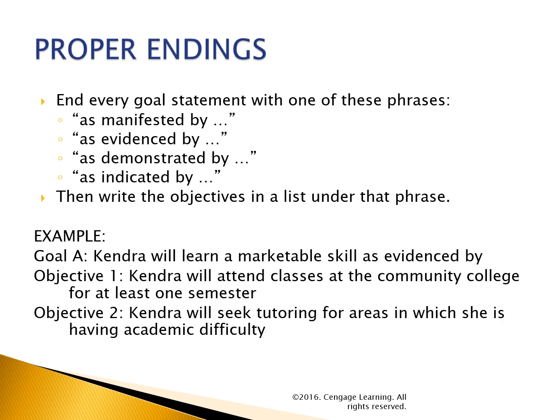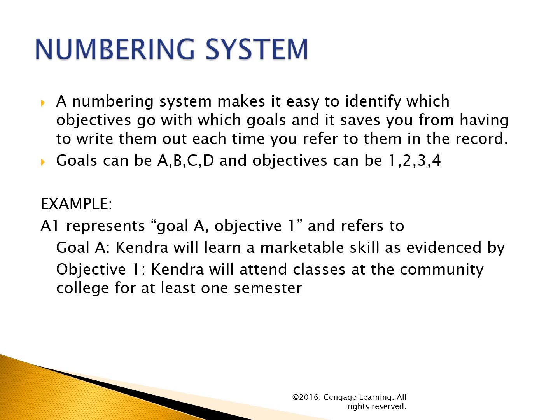Proper endings: end every goal statement with one of these phrases — 'as manifested by,' 'as evidenced by,' 'as demonstrated by,' 'as indicated by' — then write the objectives in a list under that phrase. Example: Goal A — Kendra will learn a marketable skill, as evidenced by: Objective 1 — Kendra will attend classes at the community college for at least one semester; Objective 2 — Kendra will seek tutoring for areas in which she is having academic difficulty. A numbering system makes it easy to identify which objectives go with which goals and saves you from having to write them out each time you refer to them in the record. Goals can be A, B, C, D and objectives can be 1, 2, 3 — so A1 represents Goal A, Objective 1.